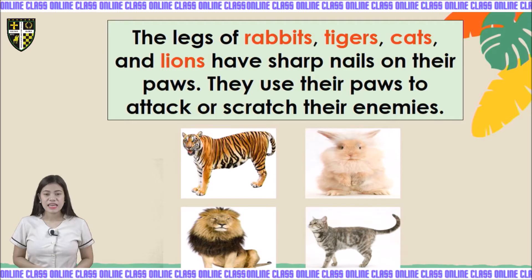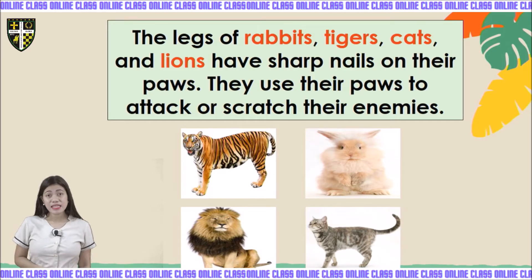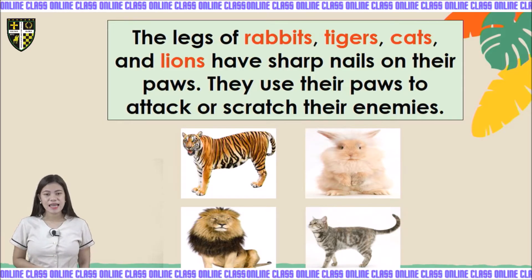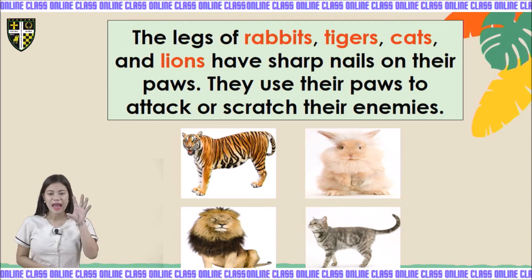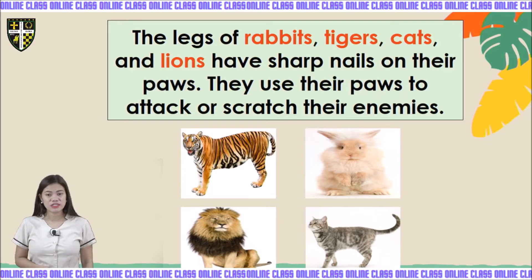The legs of rabbits, tigers, cats, and lions have sharp nails on their paws. They use their paws to attack or scratch their enemies.